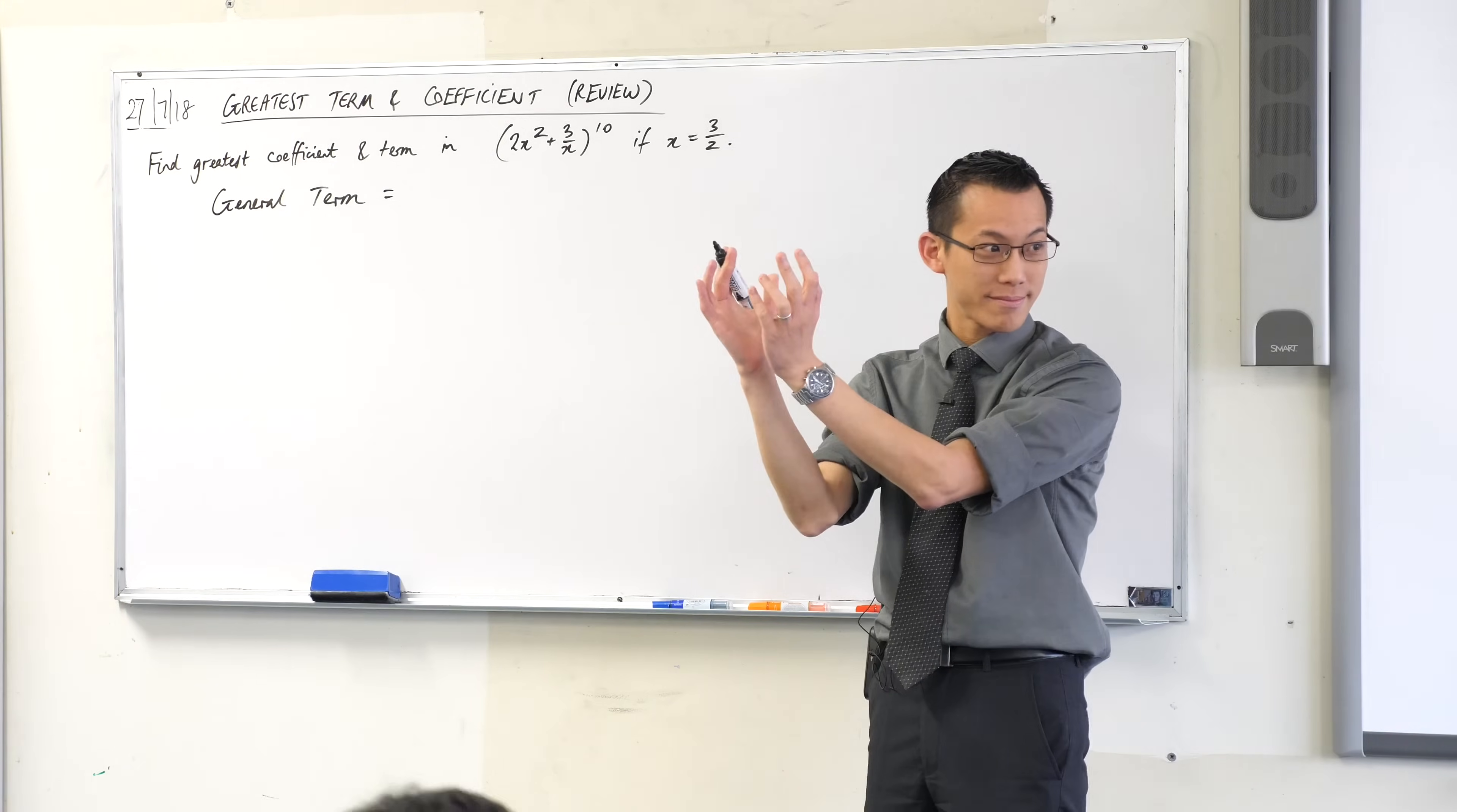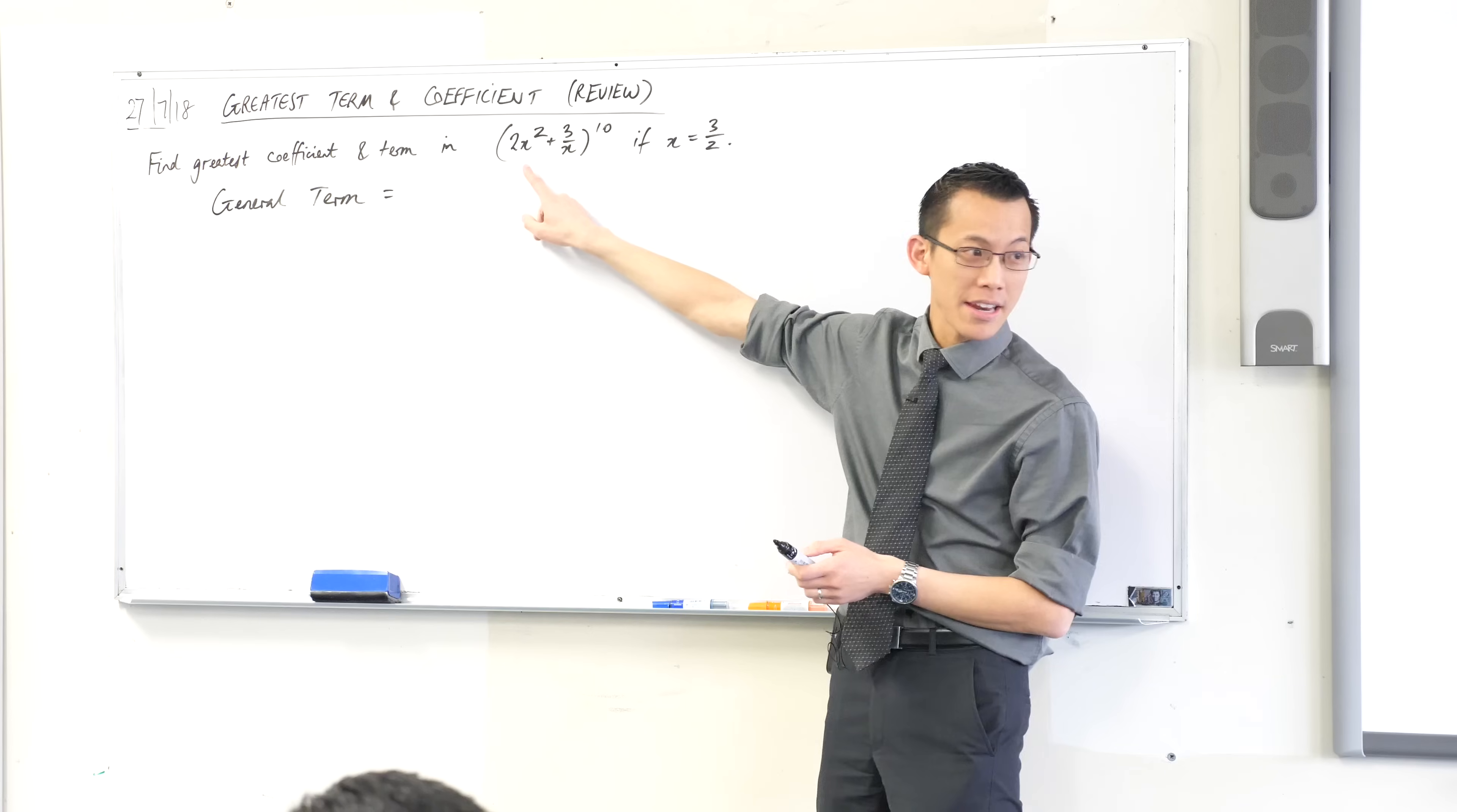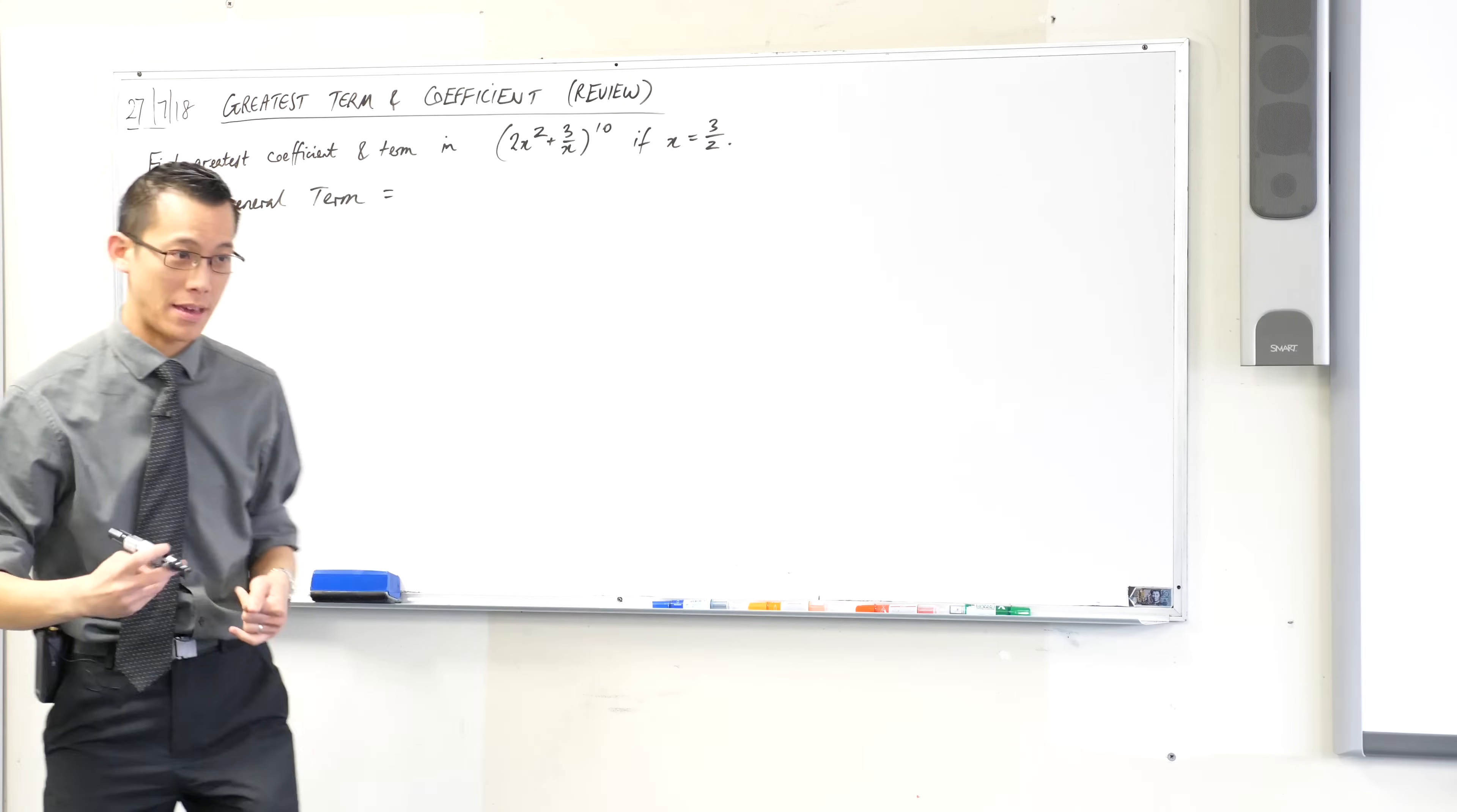There's going to be the binomial coefficient. There will be some number of the 2x squareds, and some number of the 3 on x's. You'll either have more or less of these and they will balance out as you progress through the expansion. So let's write those three pieces.